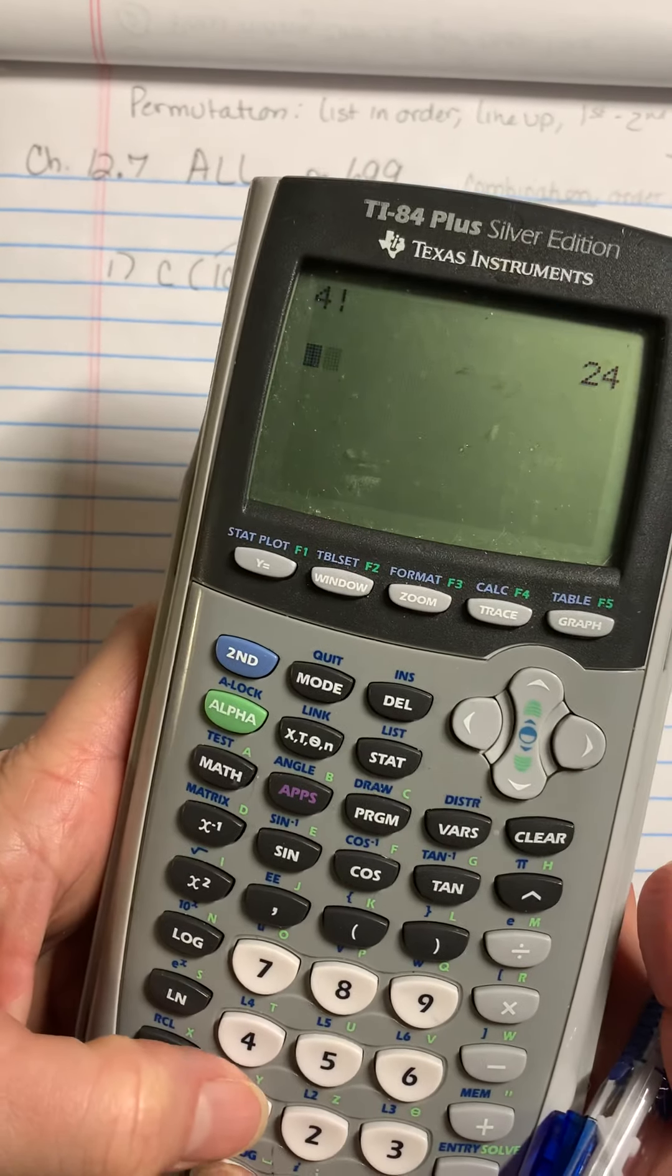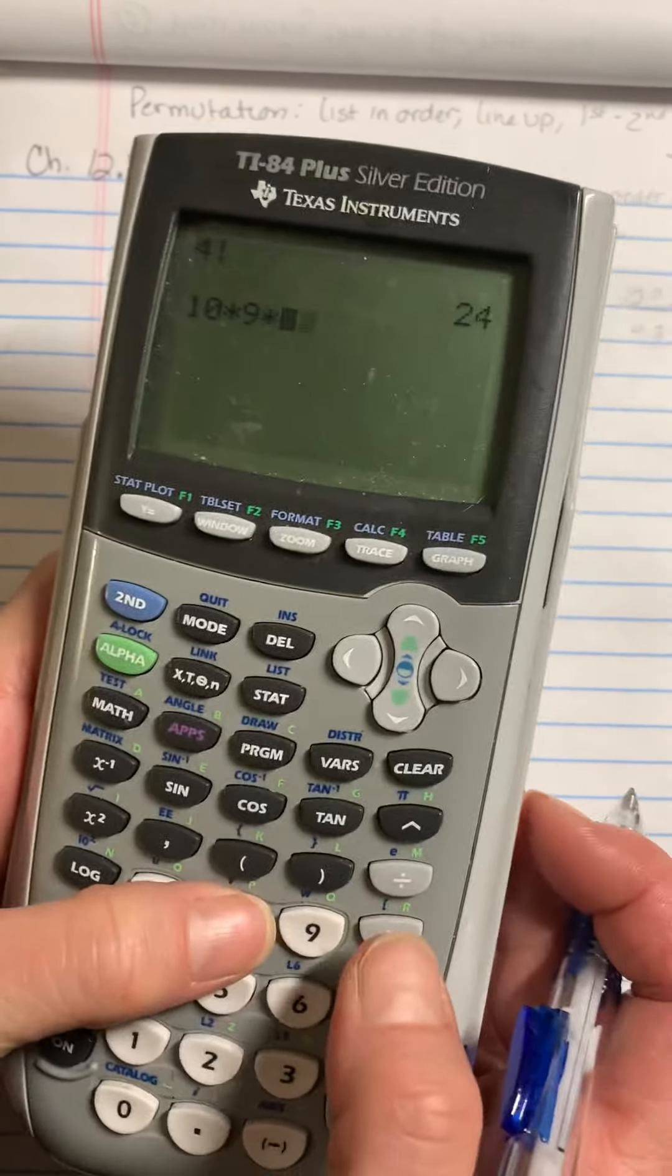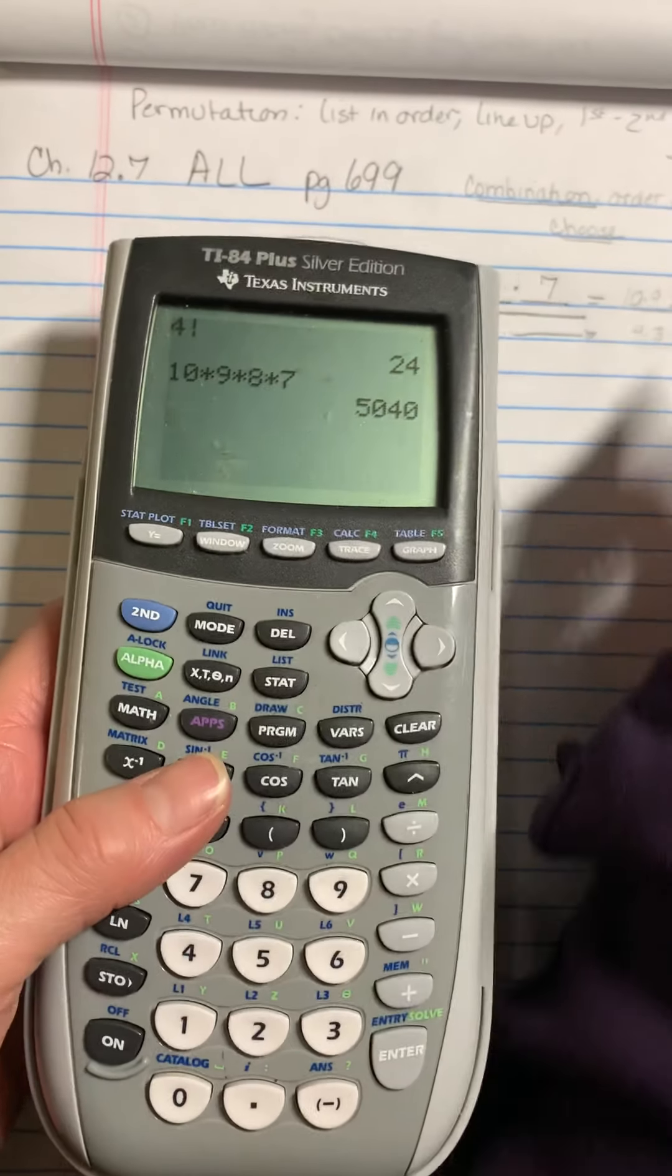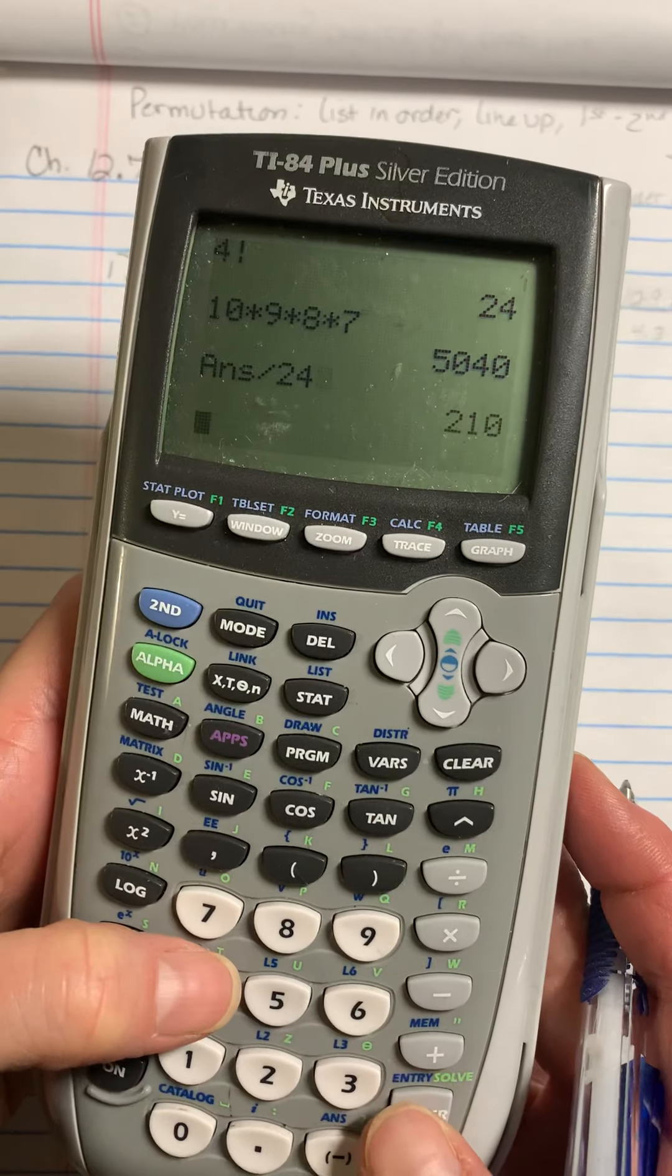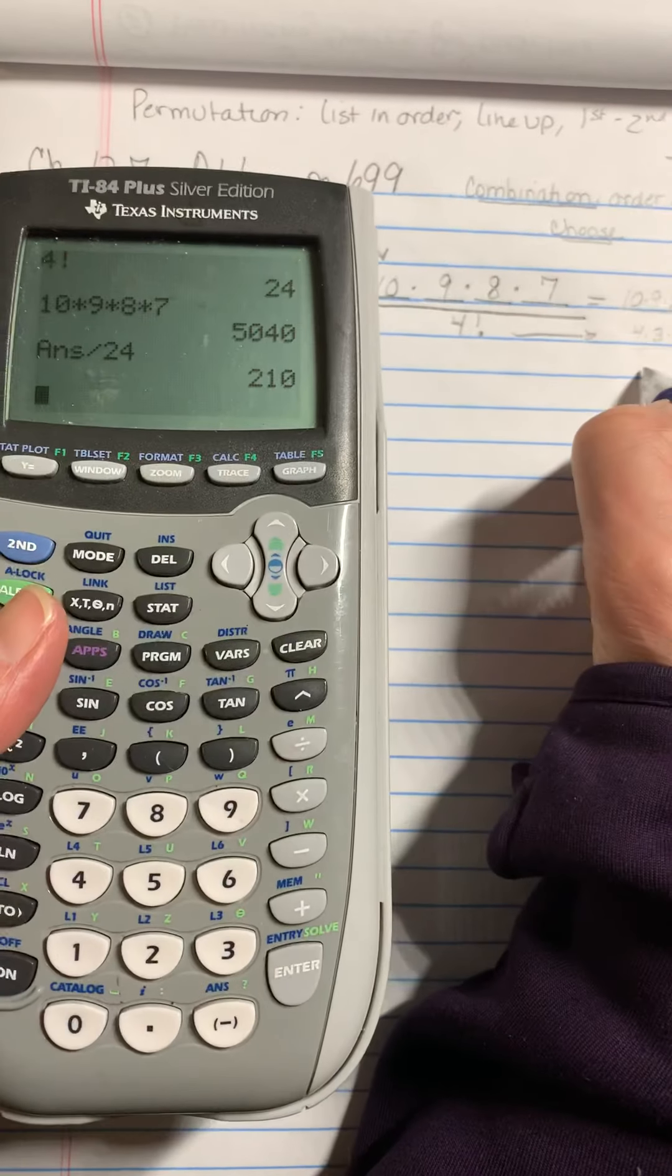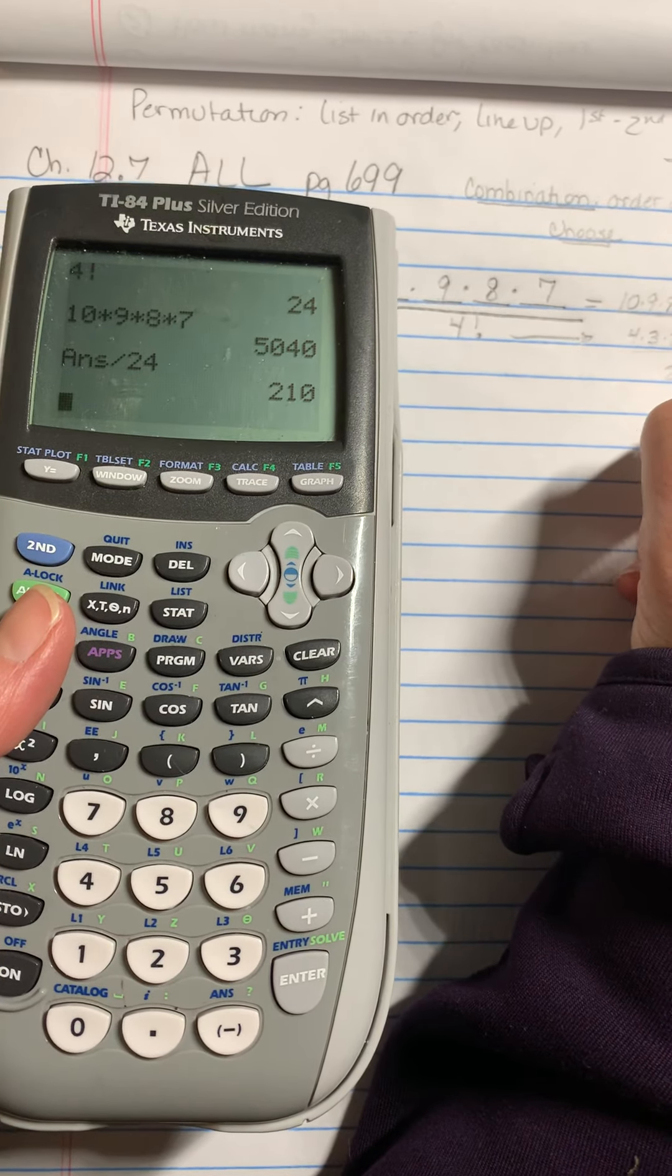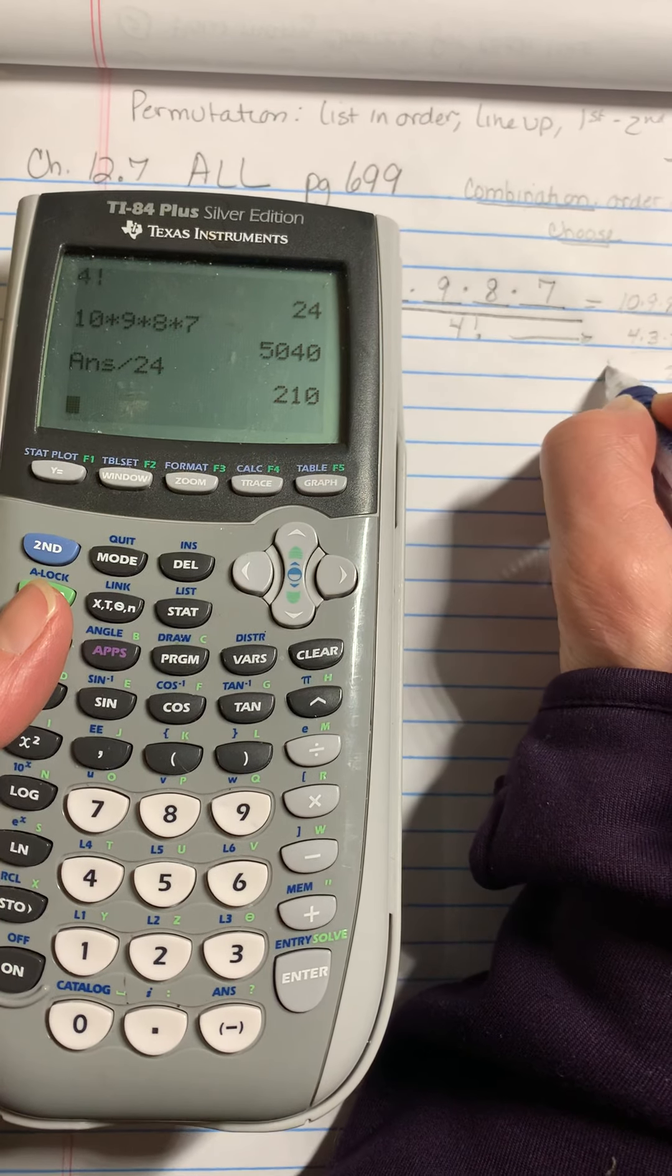So this will be 24. And then on the top, I have 10 times 9 times 8 times 7, which is 5040 divided by that four factorial will be 210 is my combination.